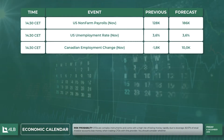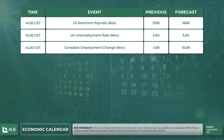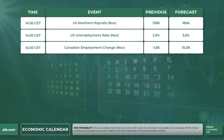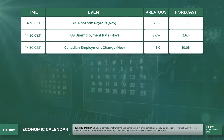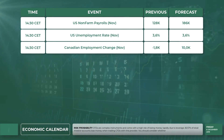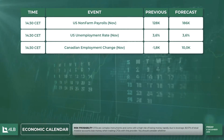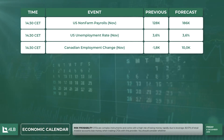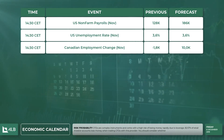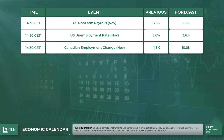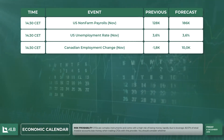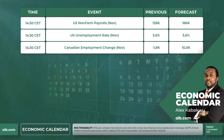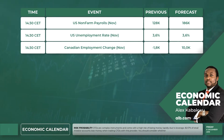Hello everyone, my name is Alexander Kabaku and welcome to ALB, the place to trade. The economic calendar for Friday the 6th of December 2019 is as follows: at 2:30 PM CET we have the US non-farm payrolls for the period of November, followed by the US unemployment rate for the period of November, and lastly the Canadian employment change for the period of November at 2:30 PM.